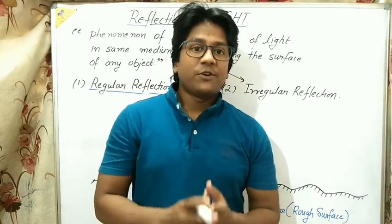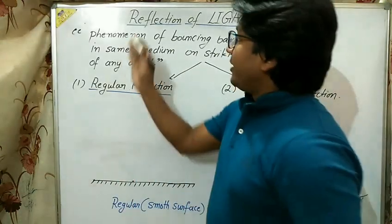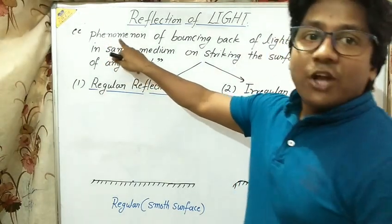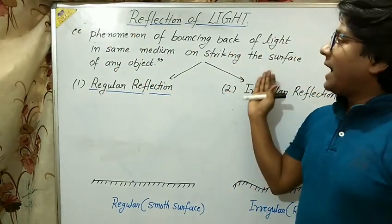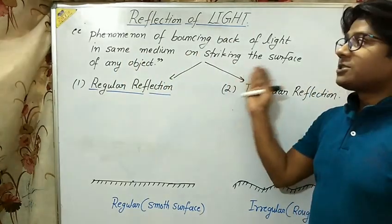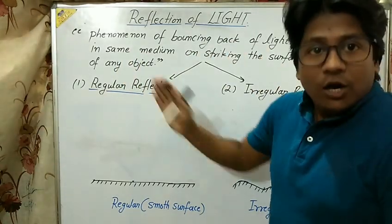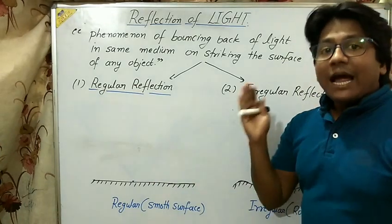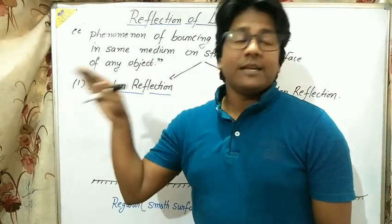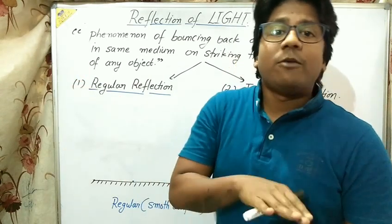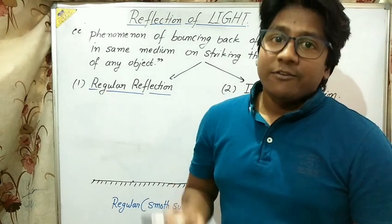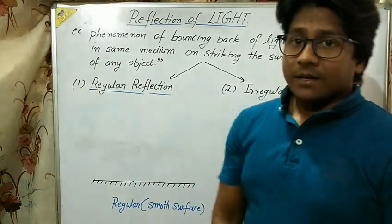This phenomena we can explain as: reflection of light is a phenomena of bouncing back of light in the same medium on striking the surface of any object. When a light ray bounces back in the same medium when it reflects from a reflecting plane, this phenomena is called reflection of light.